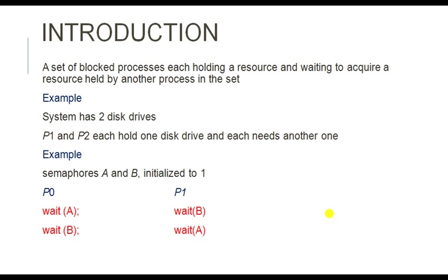Consider one scenario: there are two processes P1 and P2, and each process is accessing one resource. For example, P1 is accessing resource A and P2 is accessing resource B. At the same time, P1 is waiting for resource B and P2 is waiting for resource A. This is the scenario for a deadlock situation.